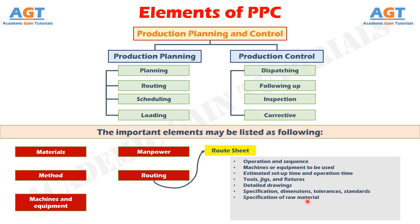Further route sheet contents include specification of raw material to be used; speed, feed etc. to be used in machine tools for the operations to be carried on; inspection procedure and metrology tools required for inspection; and packing and handling instructions during movement of parts and sub-assemblies through the operation stages.